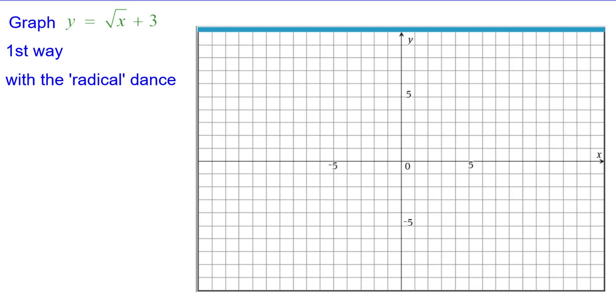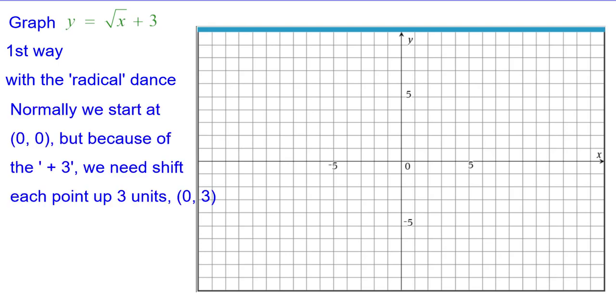The first way we'll do this is what we're going to call the radical dance. Normally we'd start at the origin, but because of the plus 3, we need to shift each point up 3 units. So we're going to start at (0,3).